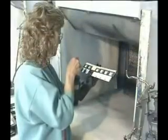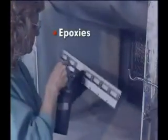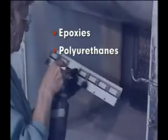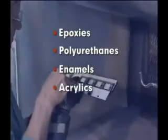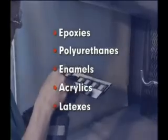There are a variety of paints available for use on plastics, including epoxies, polyurethanes, enamels, acrylics, and latexes. Paints are applied to plastics using many methods, with some of the most common including conventional air spraying, high volume low pressure spraying, and flow coating.